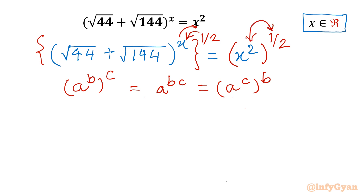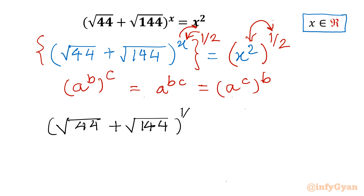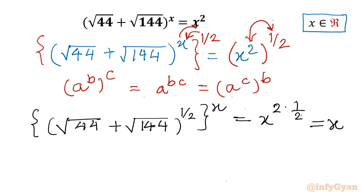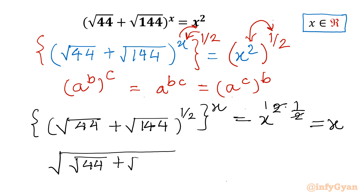These two exponents will be switched and here I will take the product in the exponents. So we can write the LHS as (√44 + √144)^(1/2), then raised to power x. And the right hand side it would be x^(2 × 1/2) which is equal to x. These two will cancel. So we have: √(√44 + √144)^x = x.